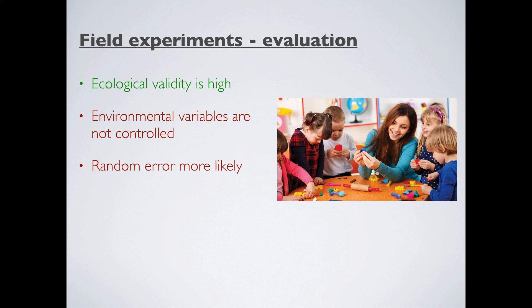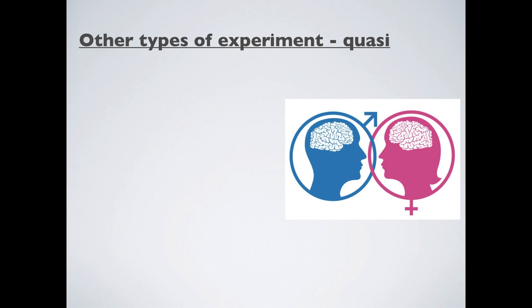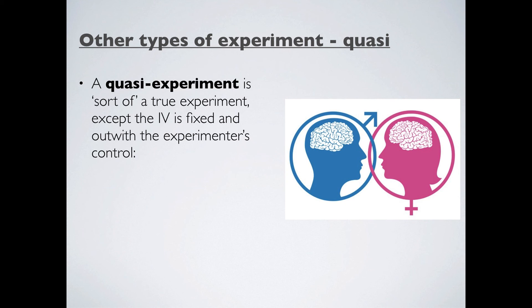So lab and field experiments are your two main types of experiments. But psychology is quite interesting. We have two other types of experiments as well. One of these I'd like to tell you about is something called a quasi-experiment. Quasi is a word that means something like partial or partially something like that. And that's a nice way to think about it. A quasi-experiment is a sort of true experiment. You change an IV and you measure the effect on the DV. But in this case, the IV is usually fixed and outwith our direct control. Now that might sound a little bit obtuse and a little bit scary to get your head around. Let me give you a couple of examples.